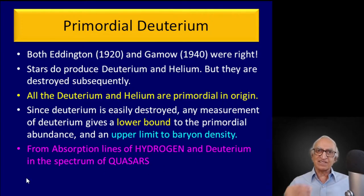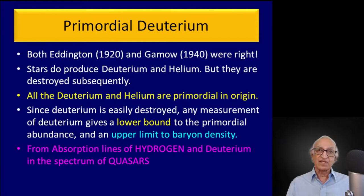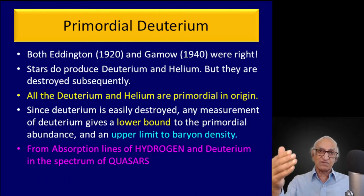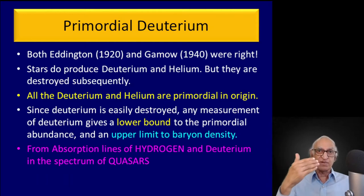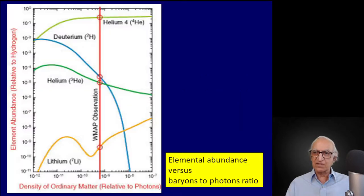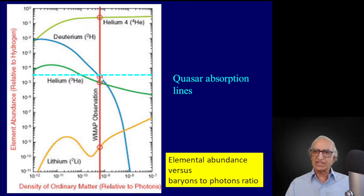Can we get a handle on an accurate measurement of deuterium? We can by looking at absorption lines of hydrogen and deuterium in quasar spectra. Quasars at very large redshifts show light absorbed by intervening intergalactic hydrogen clouds containing hydrogen and deuterium. Measuring the absorption lines gives a deuterium-to-hydrogen ratio of 2.78 × 10⁻⁵. This intersection on the theoretical plot agrees very well with the theoretical calculation. So all is well.